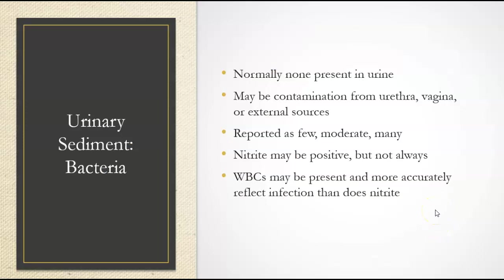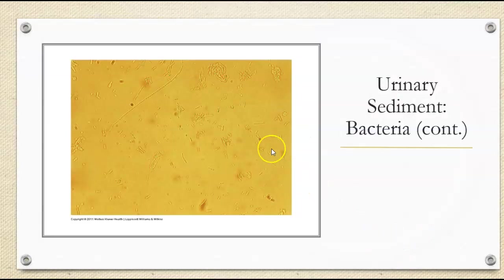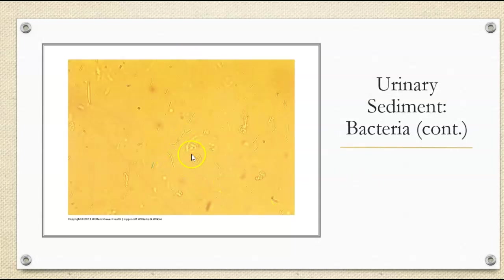Looking at bacteria in the urine — normally we don't see any bacteria present in regular urine. We can see contamination from the urethra, the vagina, or external sources. We report them as few, moderate, or many. Nitrite might be positive, but not always, because if you don't have a nitrate-reducing bacteria it will not produce nitrite. White cells can be present and will more accurately reflect infection than a nitrite result itself. Here are some bacteria — you can see short little chains, some clumps, and then a very long chain of bacteria, and here is a white cell.